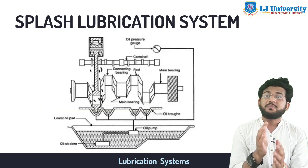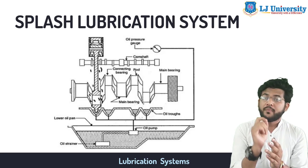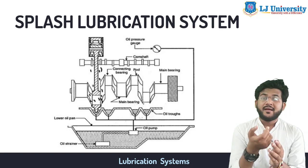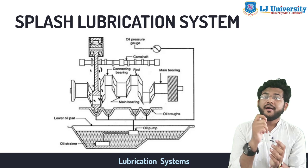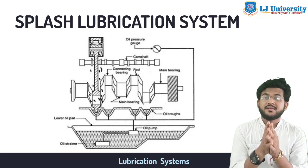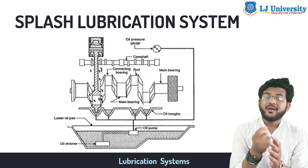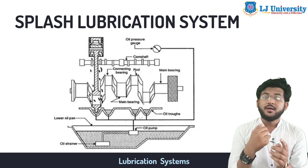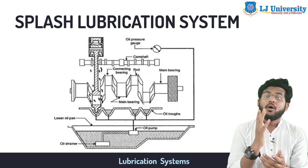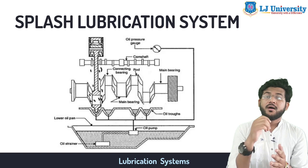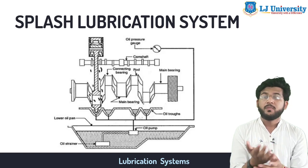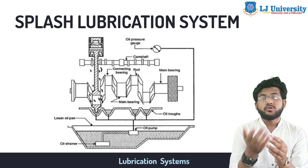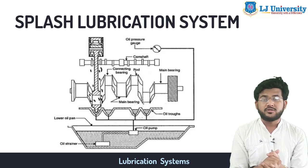First sub-type is the splash lubrication system. The lubricating oil is filled in the sump. Scoops — like spoons — are attached to the end of the connecting rod. When the system moves to the bottom dead center, the scoop splashes the lubricating oil to the piston, cylinder, big end of the connecting rod, main bearing, camshaft, and camshaft bearing. The splashed oil settles on the engine parts and returns to the sump, completing the lubrication cycle.